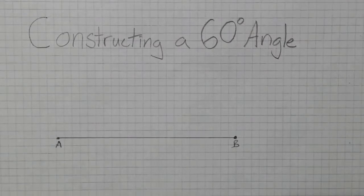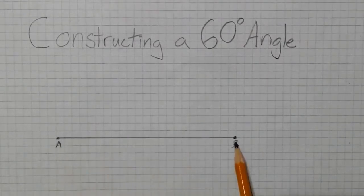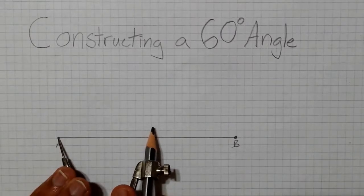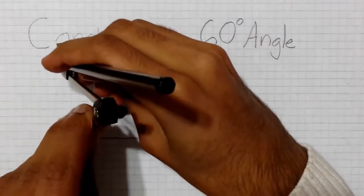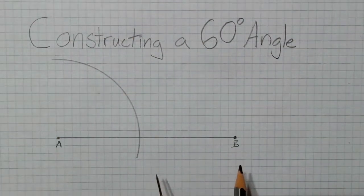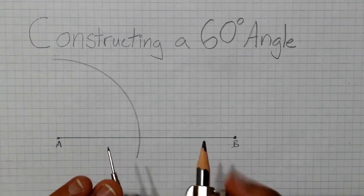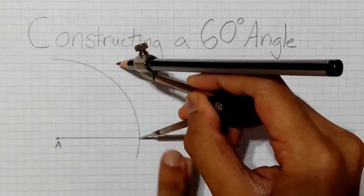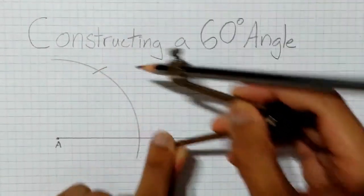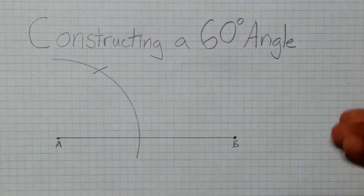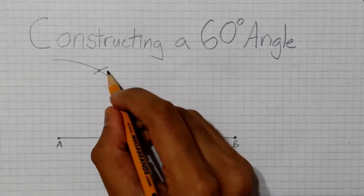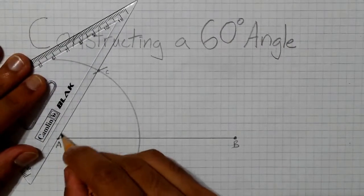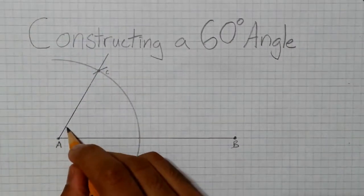A quick and simple construction is constructing a 60 degree angle, starting with line segment AB. First, take the tip of the compass and place it on point A and make a large arc through the line segment. Then using the same distance of the compass, place the tip on the intersection of the arc and the line segment and draw another arc intersecting the first arc. Label this point of intersection point C. Then using the straight edge, connect points A and C to form a 60 degree angle.